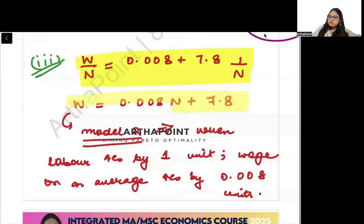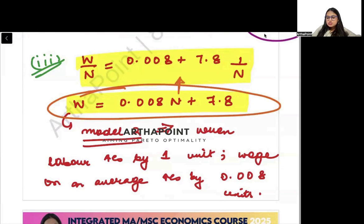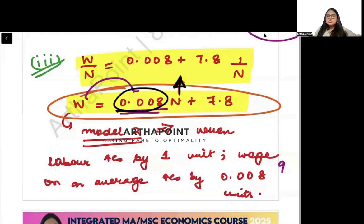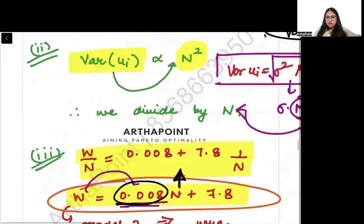If I multiply by N throughout, this tells me that when worker increases by one unit, the average wage increases by 0.008 units. What was model 1 telling? It increases by 0.009 units. So this is how you can do the comparison by multiplying throughout with N. This tells that when the number of workers increases, average wage increases by 0.008 units, and this tells average wage increases by 0.009 units.